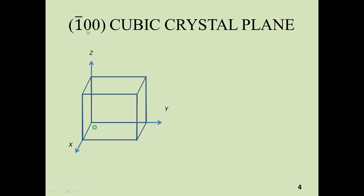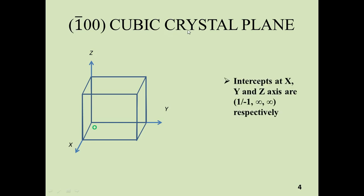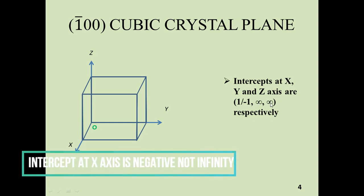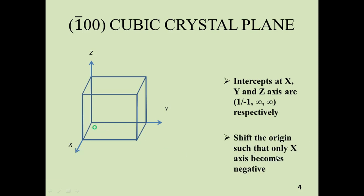We are given the Miller indices (1̄00). The bar indicates a negative sign. To draw this plane, the first step is to find the intercepts by working in reverse: take the reciprocal to get minus 1 over 1, infinity, infinity. This means the intercept at the x-axis is -1, and the intercepts at the y-axis and z-axis are both at infinity. Since the intercept at the x-axis is negative, we have to shift the origin so that only the x-axis becomes negative.